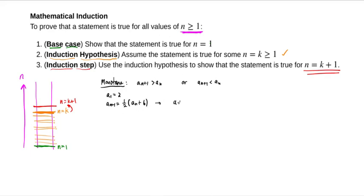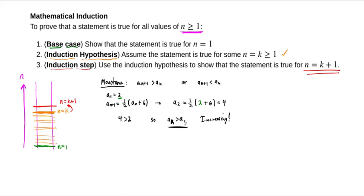This tells us that a sub 2 equals one half of a sub 1 plus 6, which is one half of 2 plus 6, equals one half of 8, which is 4. And obviously 4 is greater than 2. So a sub 2 is greater than a sub 1, which indicates that our sequence is probably increasing. What we've just done is actually shown the base case — we've gone from the first term to the second term and increased. That's step 1, the base case.